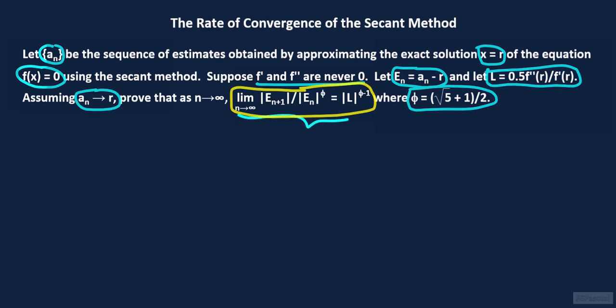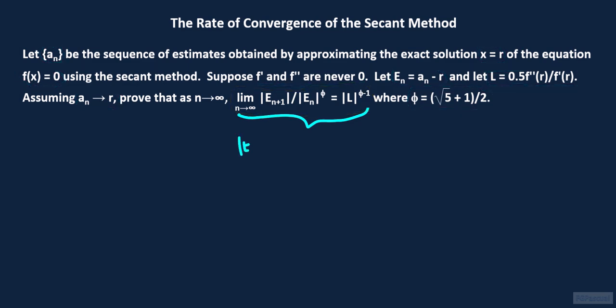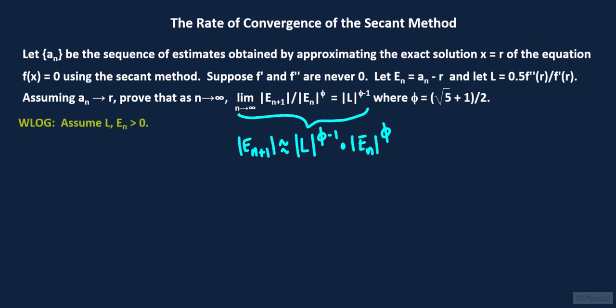This limit statement also means that the absolute value of e sub n plus 1 behaves like the absolute value of l raised to the phi minus 1th power times the absolute value of e sub n raised to the phi power for large values of n. For the derivation, without loss of generality and to simplify the notation, we will assume that both l and e sub n are greater than 0.